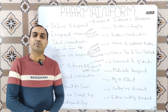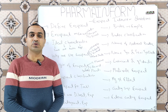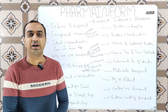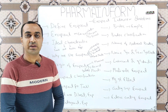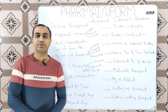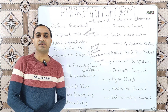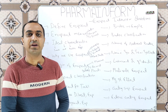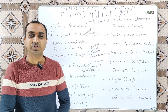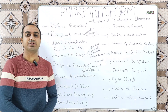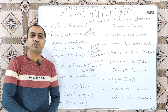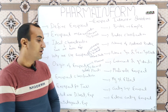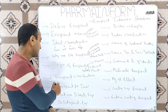The next question is: which excipients are used for tablet manufacturing? The tablet manufacturing excipients are bulking agents, binders, disintegrants, colorants, glidants, lubricants, and sweeteners. Preservatives can also be used.